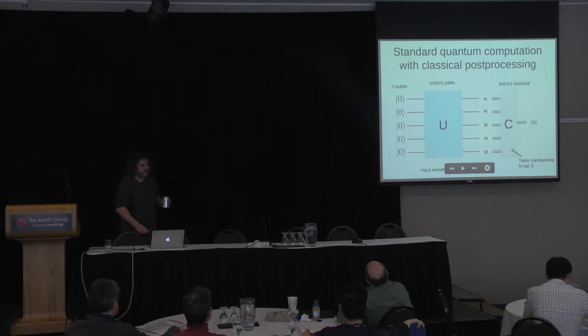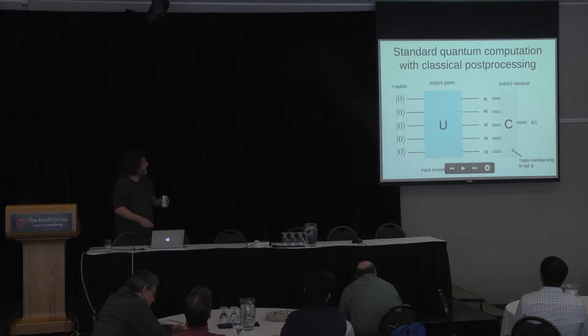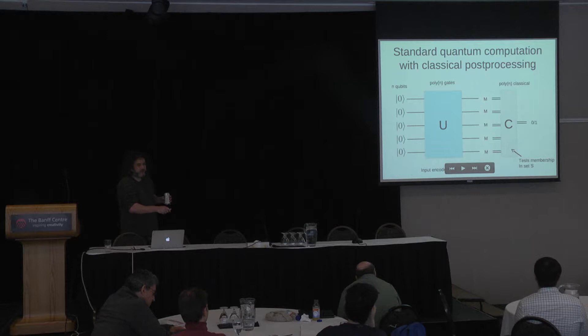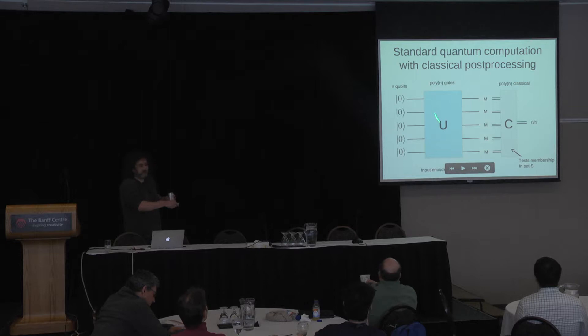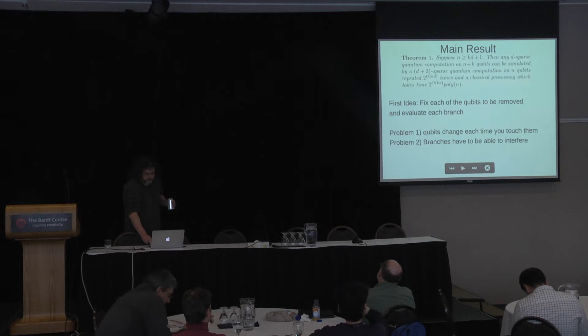To understand the setup, we use what we call standard quantum processing with classical post-processing, equivalent to regular BQP. We start with a state initialized to zeros and a ground state, run a quantum computation, encode the input in which unitary we apply, then measure everything in the computational basis, and run a polynomial classical algorithm that outputs a zero or one for decision problems.